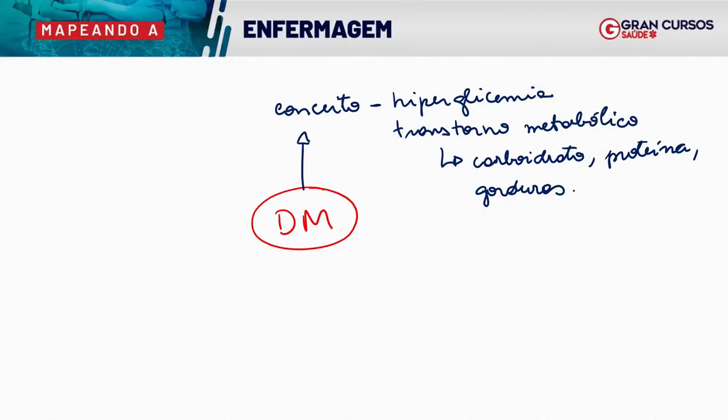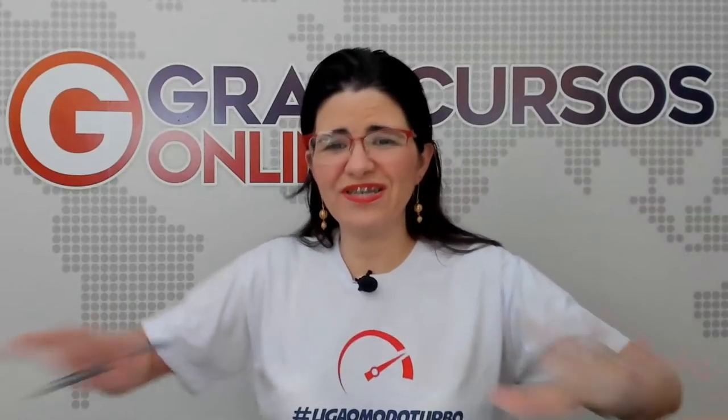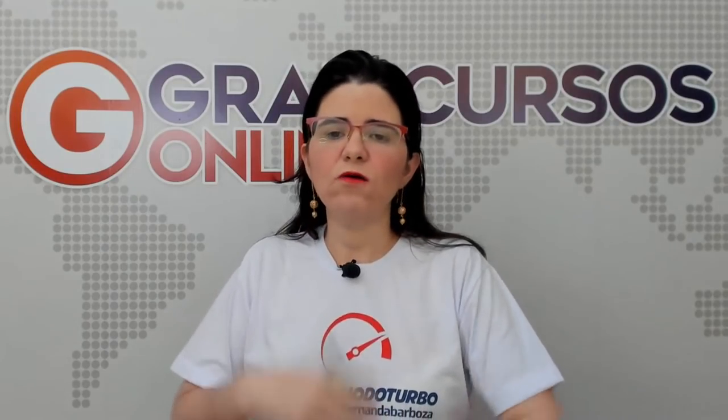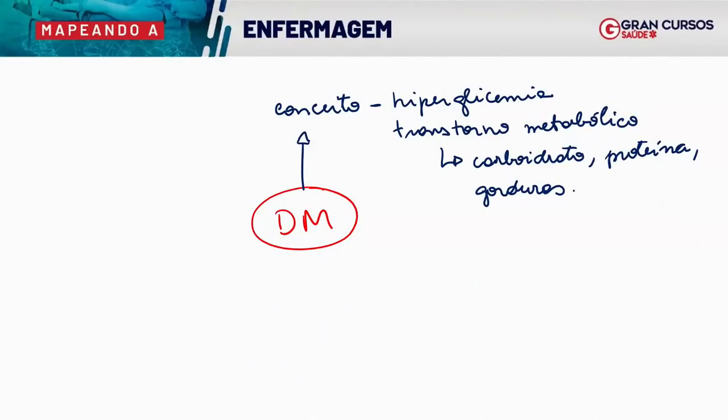Às vezes a gente pensa que o diabetes é só glicose, mas na hora da prova aparece proteína e gordura. Isso caiu em prova do CESP. O diabetes altera o metabolismo tanto da glicose quanto da proteína quanto do lipídio. Por isso a gente começou com esse conceito hoje.